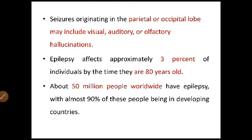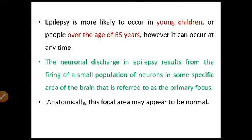Epilepsy affects approximately 3% of individuals by the time they are 80 years old. About 50 million people worldwide have epilepsy, with almost 90% of these people being in developing countries. Epilepsy is more likely to occur in young children or people over the age of 65 years. The neuronal discharge in epilepsy results from the firing of a small population of neurons in a specific area of the brain, referred to as the primary focus.